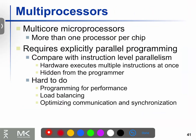We need to introduce a multi-processor — a multi-core microprocessor. This is one microprocessor, one chip, one single chip with multiple cores and multiple processors. This is the main reason for parallel programming.